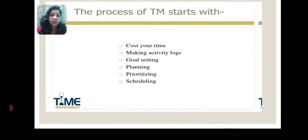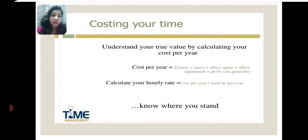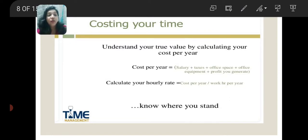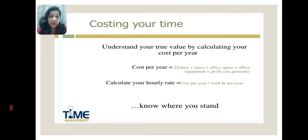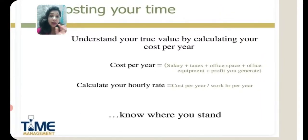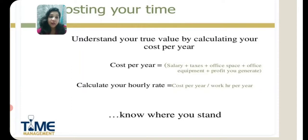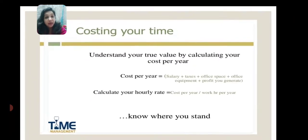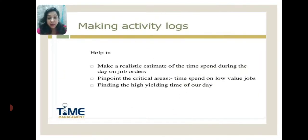Now let us see what costing your time means. You understand your true value by calculating your cost per year. In money terms, for example, salary plus taxes plus office space, office equipment, profit margin rate, etc. Then calculate your hourly rate — cost per year divided by work per year. This actually helps us understand where we literally stand, what is our right position, what we have achieved so far, how much time and energy we have spent, and what is left with us.